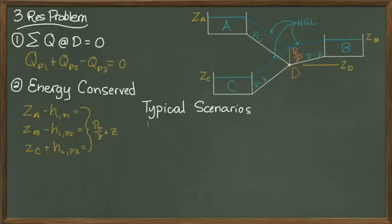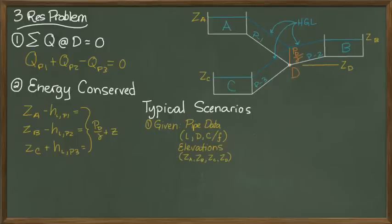A typical analysis scenario usually involves, given all of the pipe data—the diameters, lengths, and roughness of the pipelines—as well as giving the elevations of the reservoirs and point D, the task would be to find the flow rates from reservoir A, B, and C, as well as the pressure head gradient at point D.